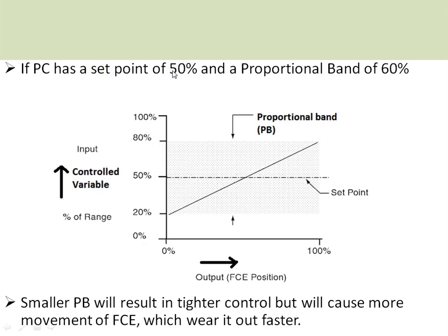This can be understood from this figure. If a proportional controller has a set point of 50 percent and a proportional band of 60 percent, the band spans plus or minus 30 percent around the set point — giving a range from 20 to 80 percent. For example, if the process range is 0 to 100 degrees, the set point is 50 degrees and the proportional band covers 20 to 80 degrees, representing an error range of 30 degrees on either side — covering 0 to 100 percent of the controller output.